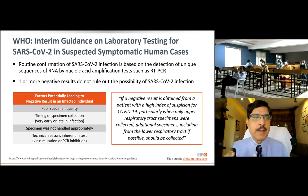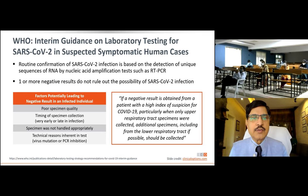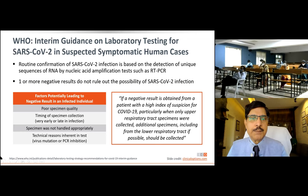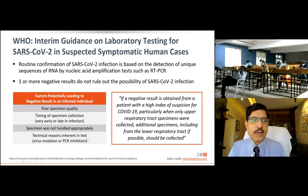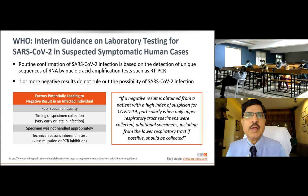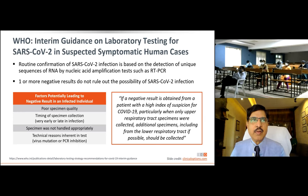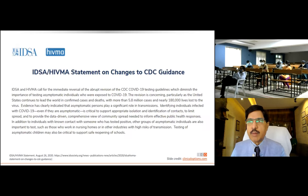WHO interim guidance states that routine confirmation of COVID-19 infection is based on detection of a unique RNA sequence by RT-PCR. Causes for false-negative RT-PCR results include: poor specimen quality not collected from the nasopharynx properly, collection timing too early in the disease, improper specimen handling, and technical reasons. The commonest reason is testing too early — for example, testing a household contact in the asymptomatic phase. If negative, repeat after three days.